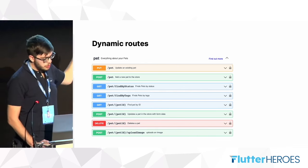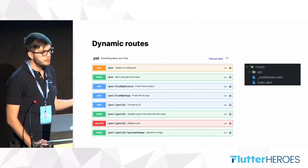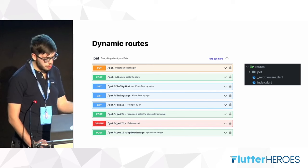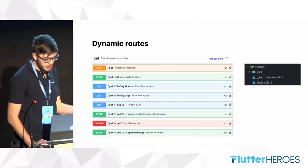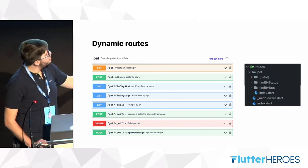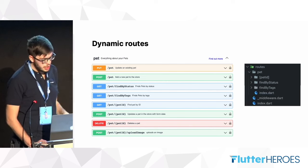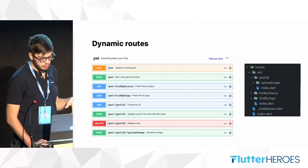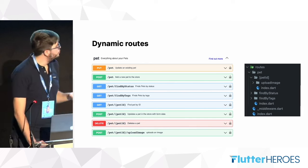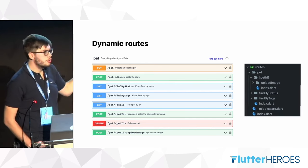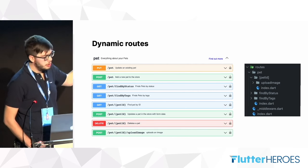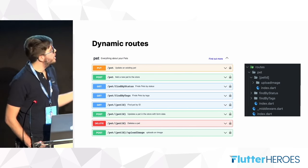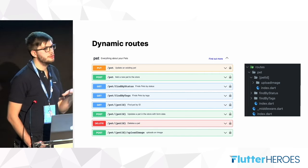Inside the routes folder, we have three nested folders: status, tags, and the dynamic path ID. We need to create these three folders inside the routes folder. And then there's another nested route — upload image — inside the path ID folder. To be identified as routes, every folder must have an index.dart file with our onRequest method inside; otherwise, Dart Frog won't identify it as a route.